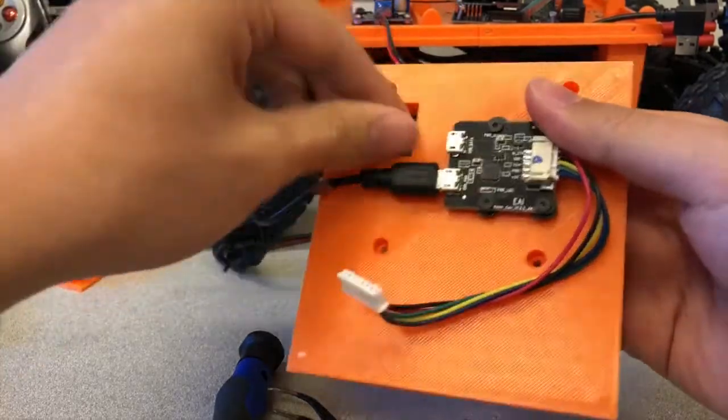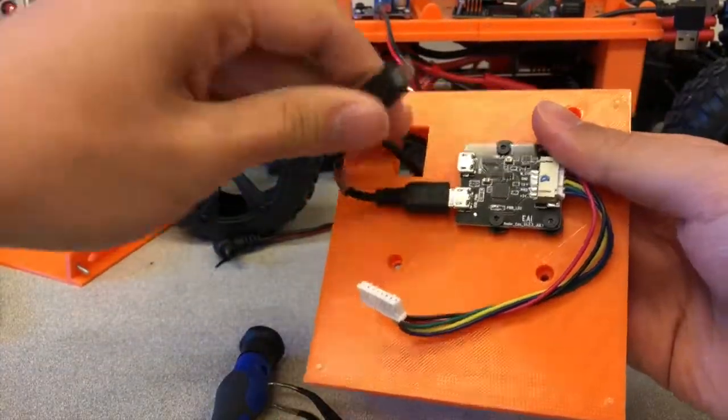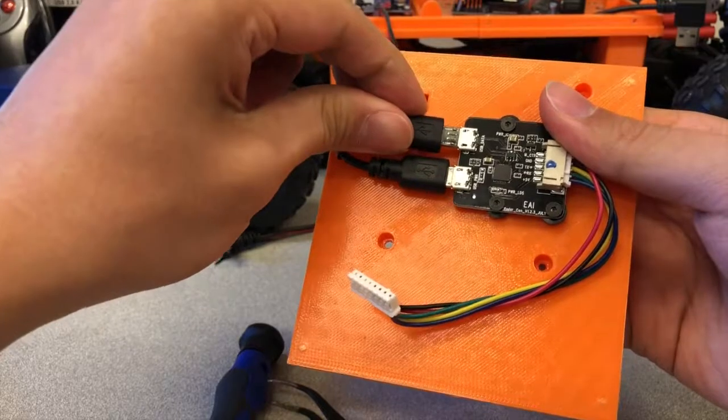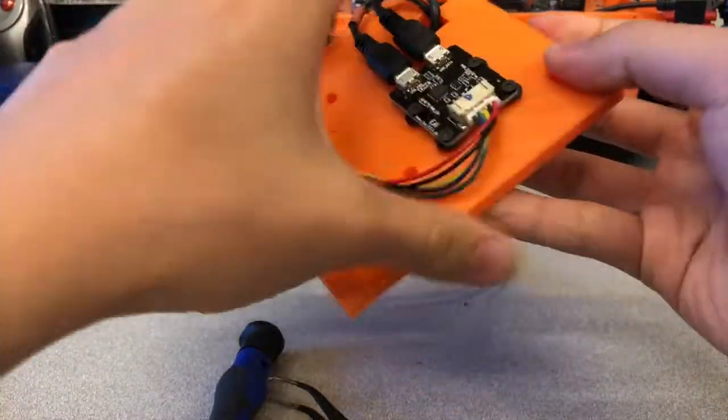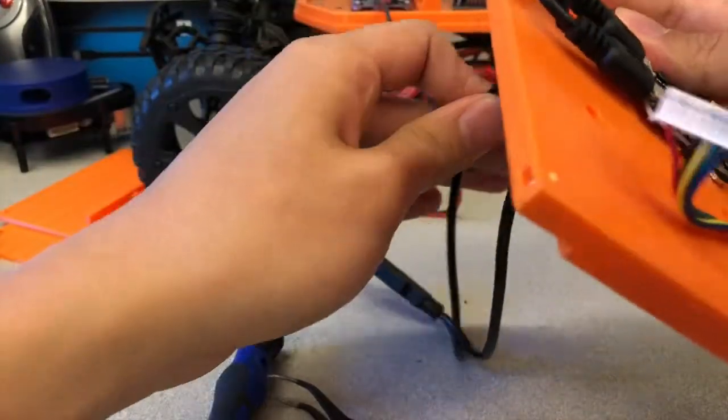Guide the USB type A end through the rectangular hole of the back cover top. Put the other USB micro splitter into the other USB connector on the circuit board.